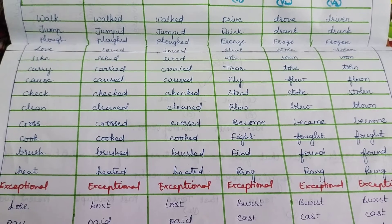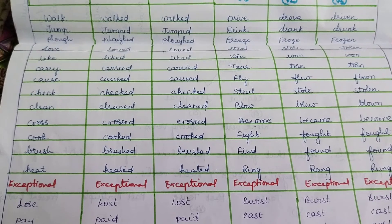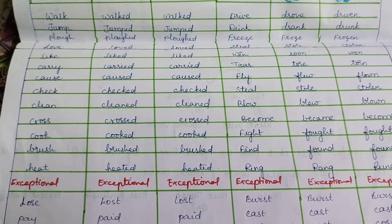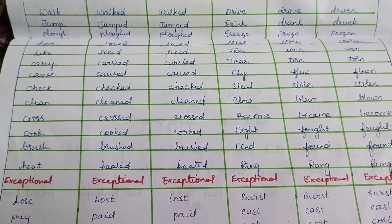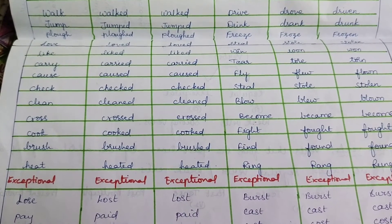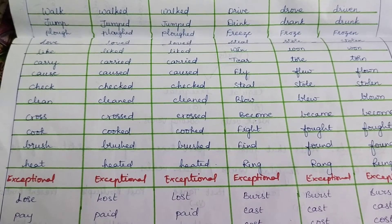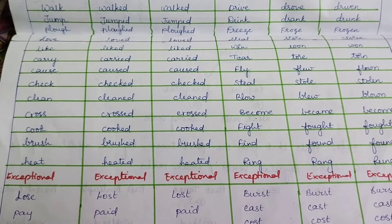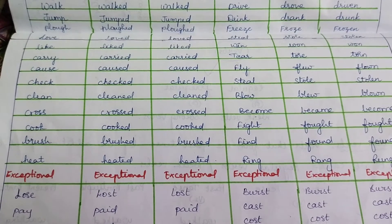Here are a few examples for regular verbs: walk, walked, walked; jump, jumped, jumped; plough, ploughed, ploughed; love, loved, loved; like, liked, liked; carry, carried, carried; cause, caused, caused; check, checked, checked; clean, cleaned, cleaned; cross, crossed, crossed; cook, cooked, cooked; brush, brushed, brushed; heat, heated, heated.